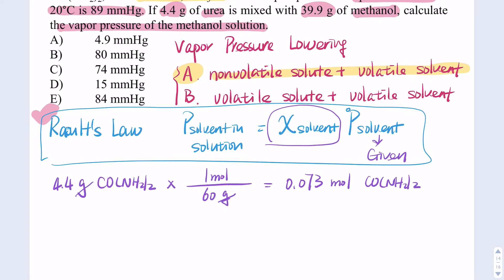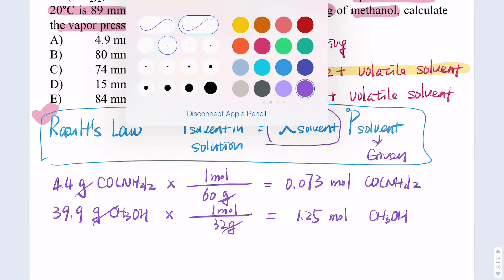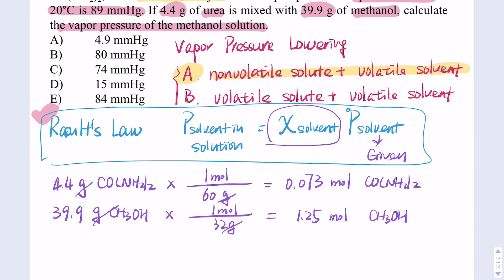Then we do a similar calculation for the solvent. We have 39.9 grams of methanol, CH₃OH. The molar mass from the periodic table is 32 grams per mole, giving us 1.25 moles of CH₃OH. As already described in the question, this is our solvent.